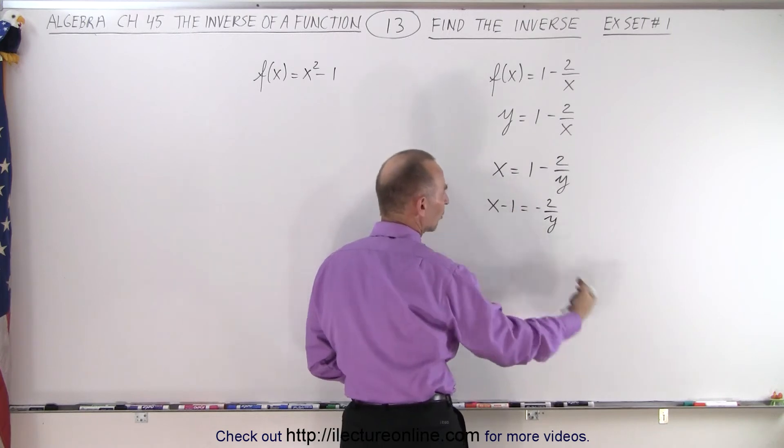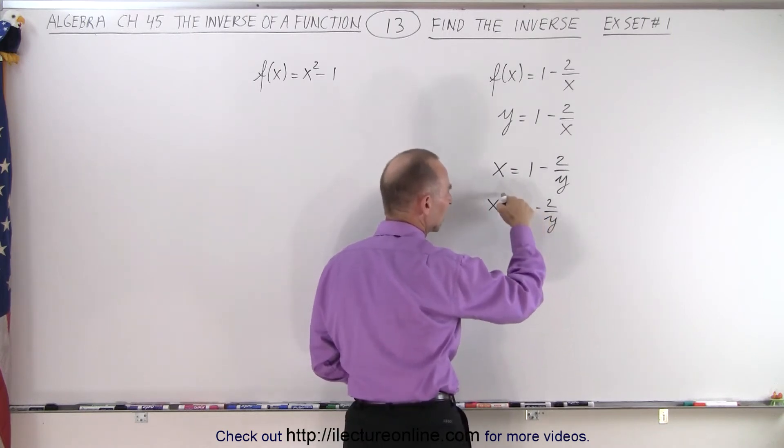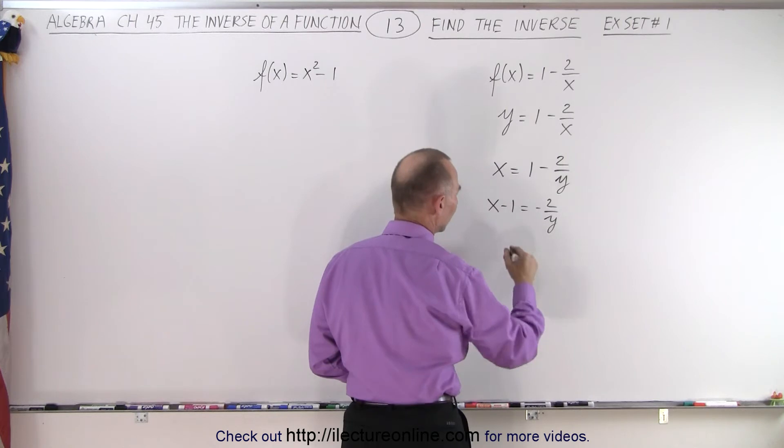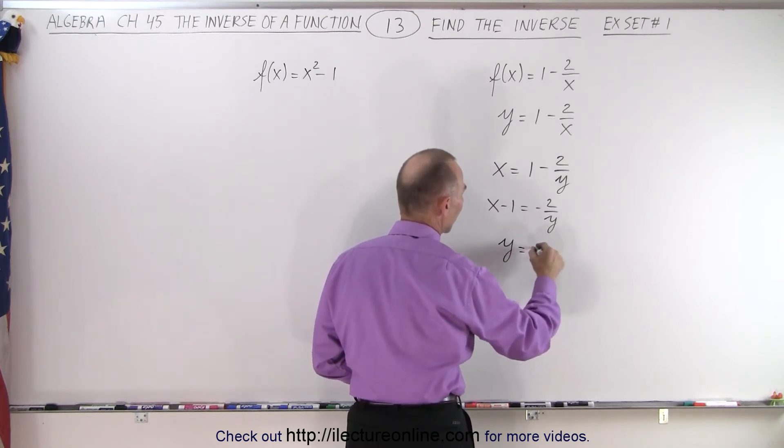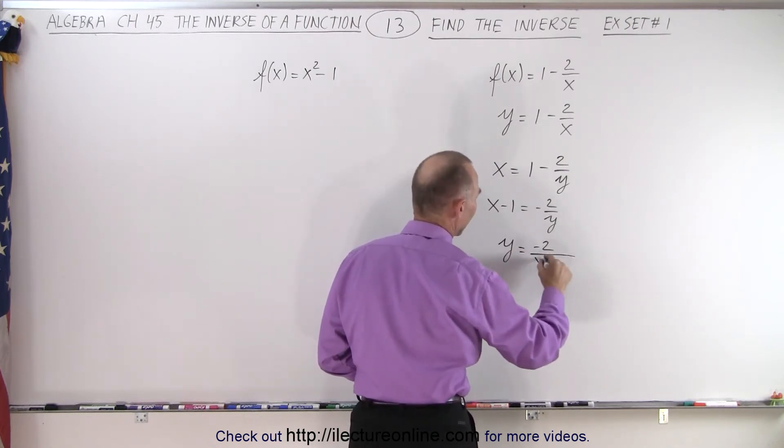And then we use the cross product. We bring the y over here and the x minus 1 down there. So we move across the diagonal so we can write that y is equal to minus 2 divided by x minus 1.